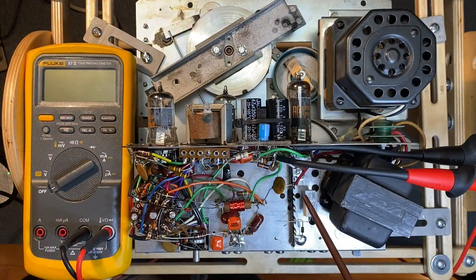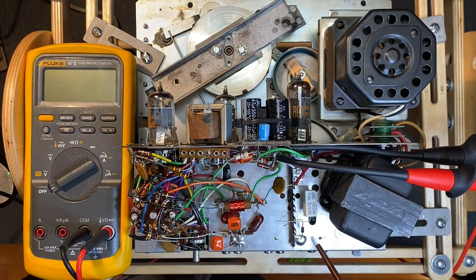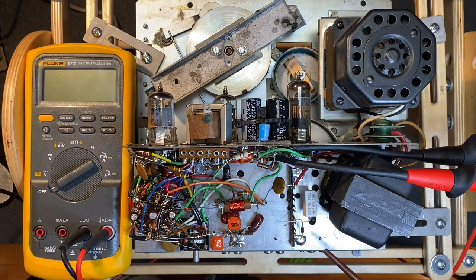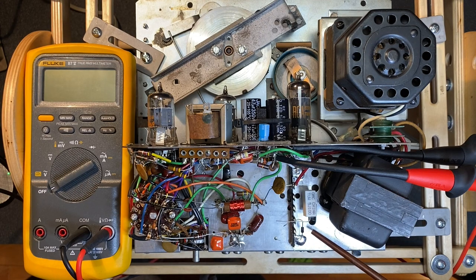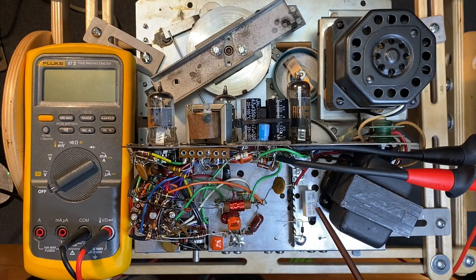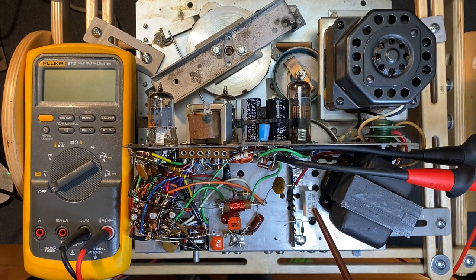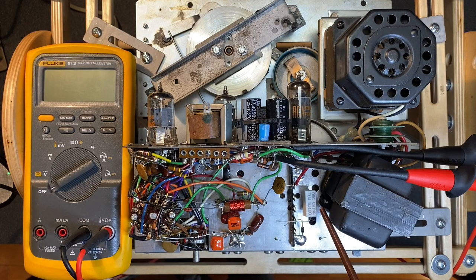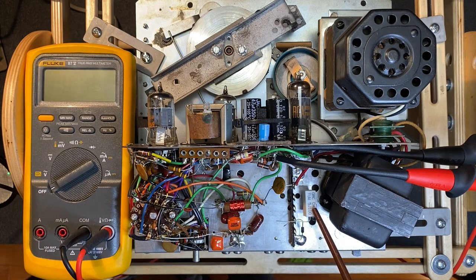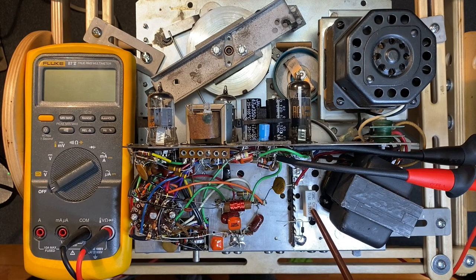The terminal strip for our selenium rectifier replacement has been installed and populated. It consists of this 1N4007 diode, and this 5 watt 100 ohm resistor. A resistor is usually necessary when replacing a selenium rectifier, because seleniums have a greater voltage drop than a silicon diode. And the resistor serves to bring the voltage back down to the original specifications for the unit.